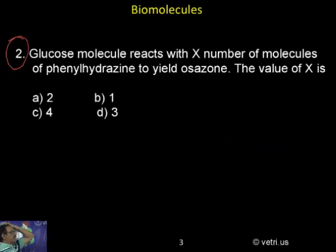Glucose molecule reacts with X number of molecules of phenylhydrazine hydrochloride to yield osazone. The value of X is: a) 2, b) 1, c) 4, d) 3.